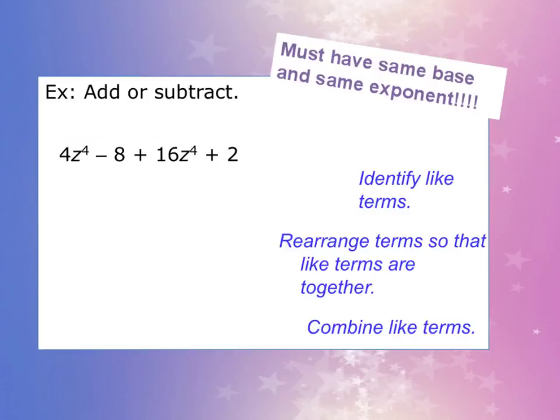Here's our first example. We are going to add or subtract 4z^4 - 8 + 16z^4 + 2. On the right-hand side, I have all the steps listed for you so you can write those down. You must have the same base and same exponent to combine like terms. Pause this video, write down all this information, and then resume when you're ready to follow along as I solve the problem.